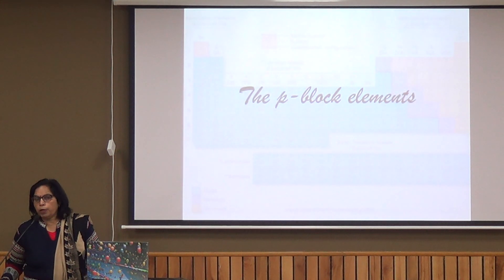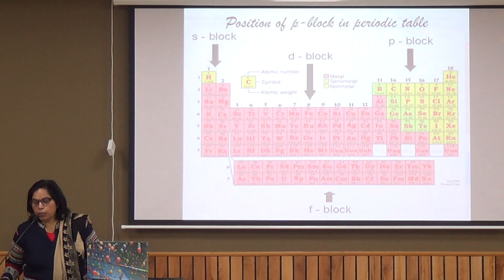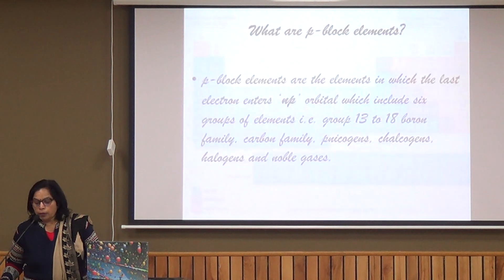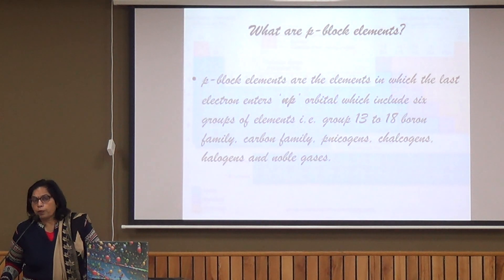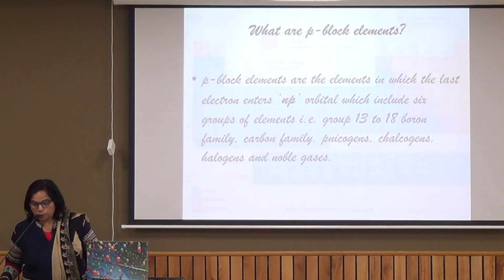Hello students, today we will discuss P-block elements. You know that the periodic table is divided into 4 blocks: S, P, D, F. P-block elements are those in which the last electron enters the P-orbital of the outermost shell, and the general configuration is NS2 P1 to P6. P-block consists of 6 groups, from group 13 to group 18. Group 13 has outermost configuration NS2 P1, group 14 has NS2 P2, and so on.